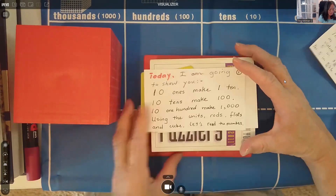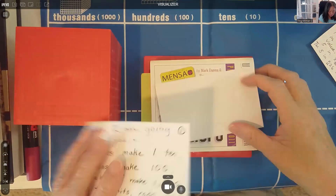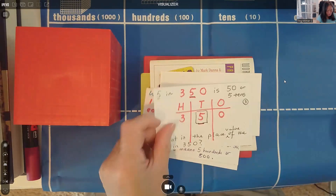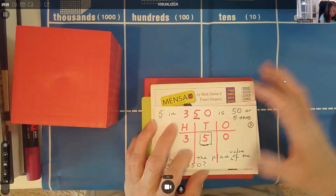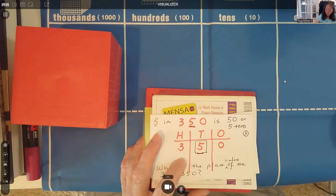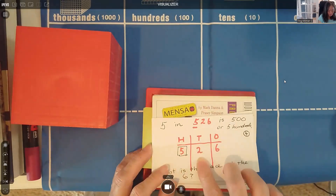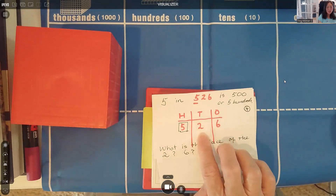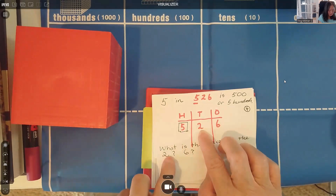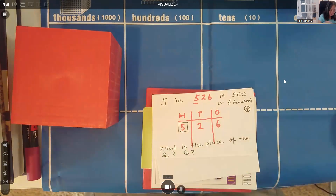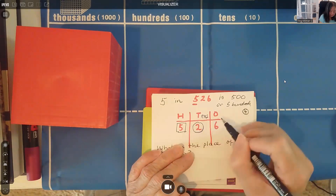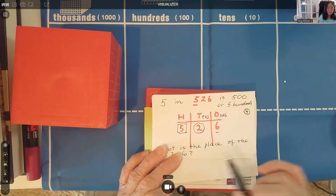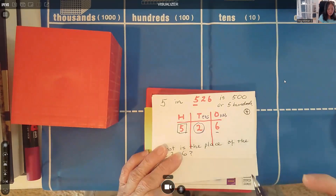This is a quick overview of the meaning of all the place values. So for 350: three flats, five rods, and zero ones. For 526: five flats, two rods, and six units. What is the place value of the 2? If 5 is in the hundreds place, then 2 is in the tens place. And the 6 is in the ones place — five hundreds, two tens, six ones. That's how we read each digit place by place.